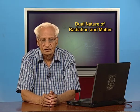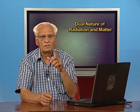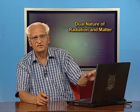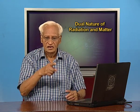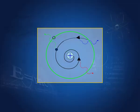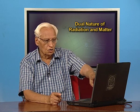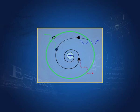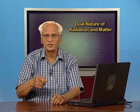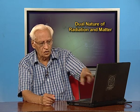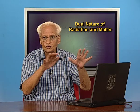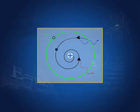Let us come back to the Bohr model. There was no justification at that time for the fact that electrons move in stationary orbits — that was one of Bohr's postulates. If the particle is not in a stationary orbit it will radiate, lose energy, and slowly fall back onto the nucleus. This was the defect in the Rutherford model which Bohr rectified by postulating that these orbits are stationary orbits.